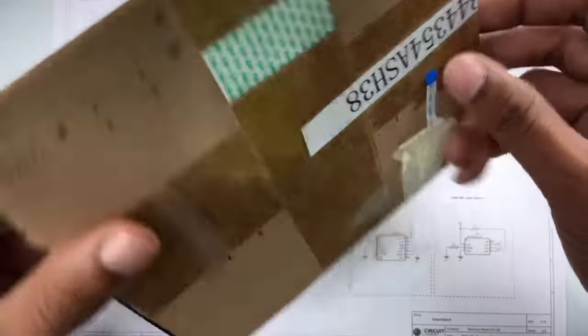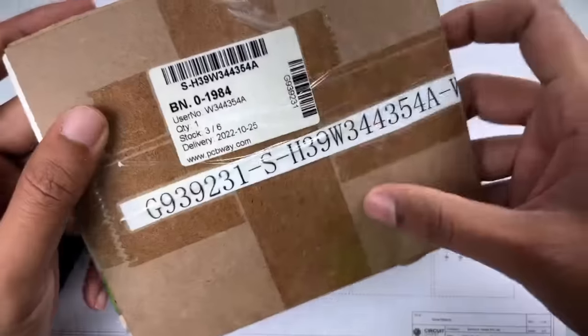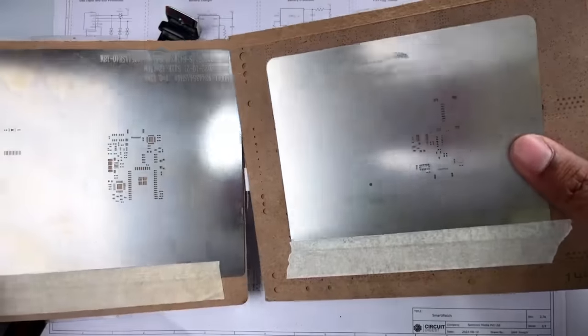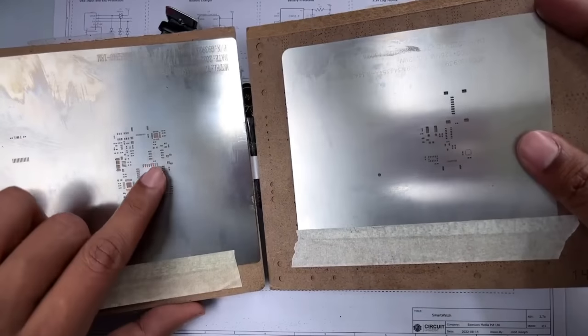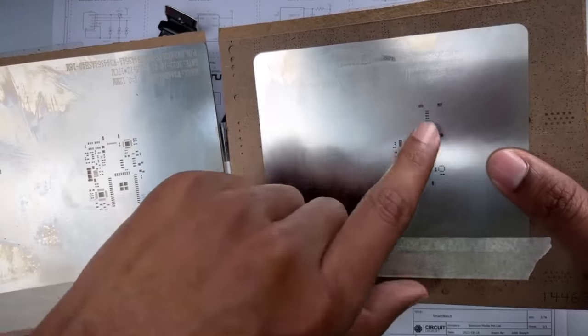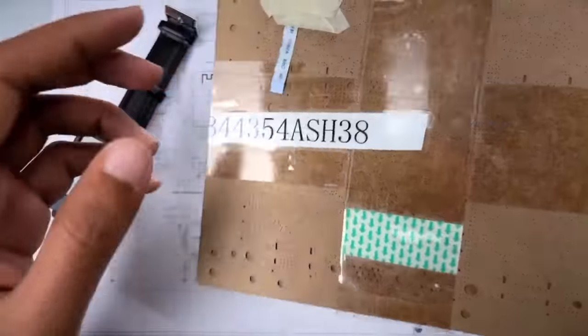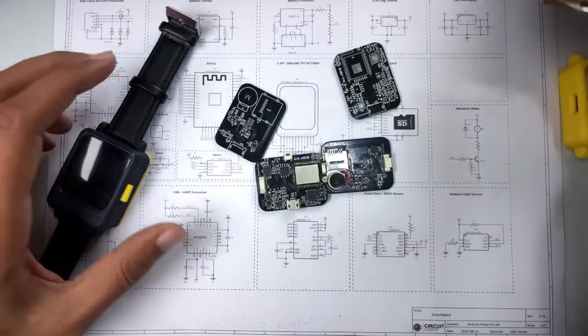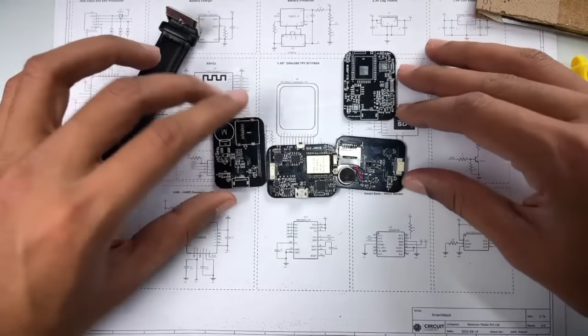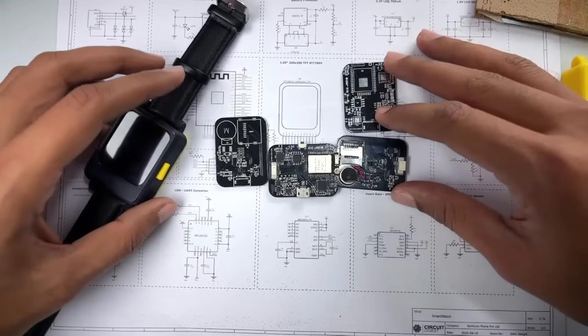So this is the stencil that was delivered by PCBWay. Let me quickly show you how the stencil looks like. This is just a simple stencil - you can just directly place your PCB board underneath this and you can apply the hot solder paste and you can solder them easily. So again, the Gerber file and everything can be found at the link given in the description of this video.